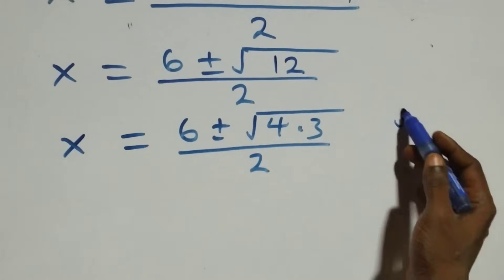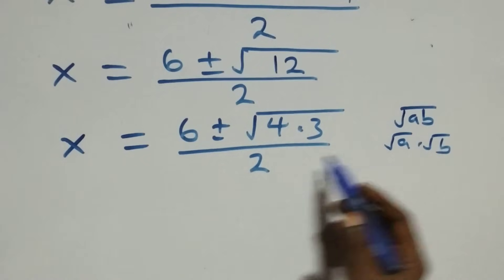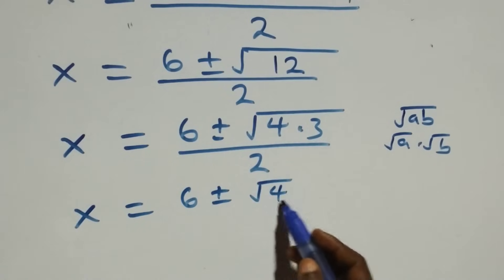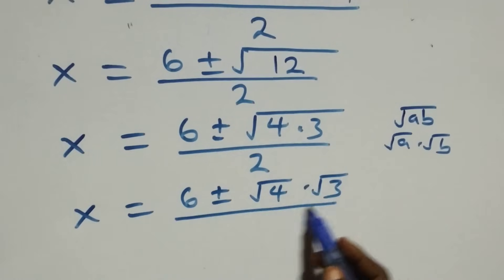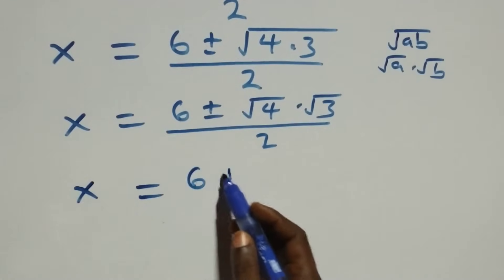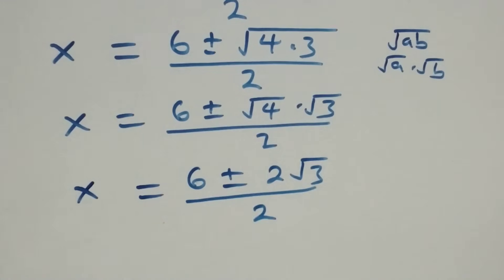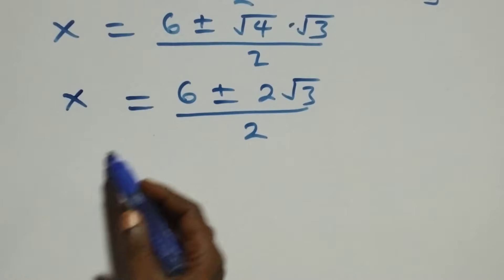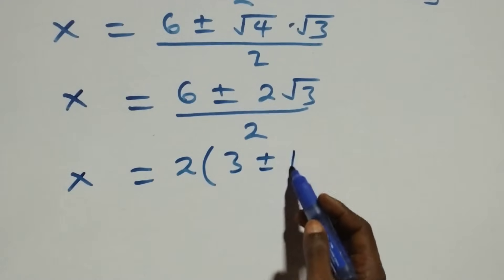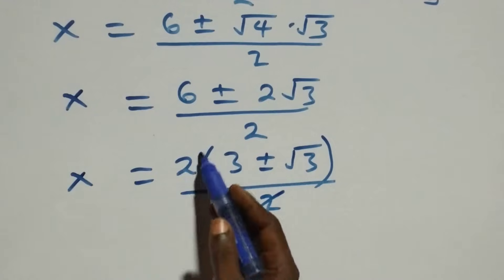Since the square root of a times b can be written as root a times root b, we have x equals 6 plus or minus root 4 times root 3, over 2. Root 4 is 2, so x equals 6 plus or minus 2 root 3, over 2. Factoring out 2 from the numerator gives x equals 2(3 plus or minus root 3) over 2, and the 2s cancel.